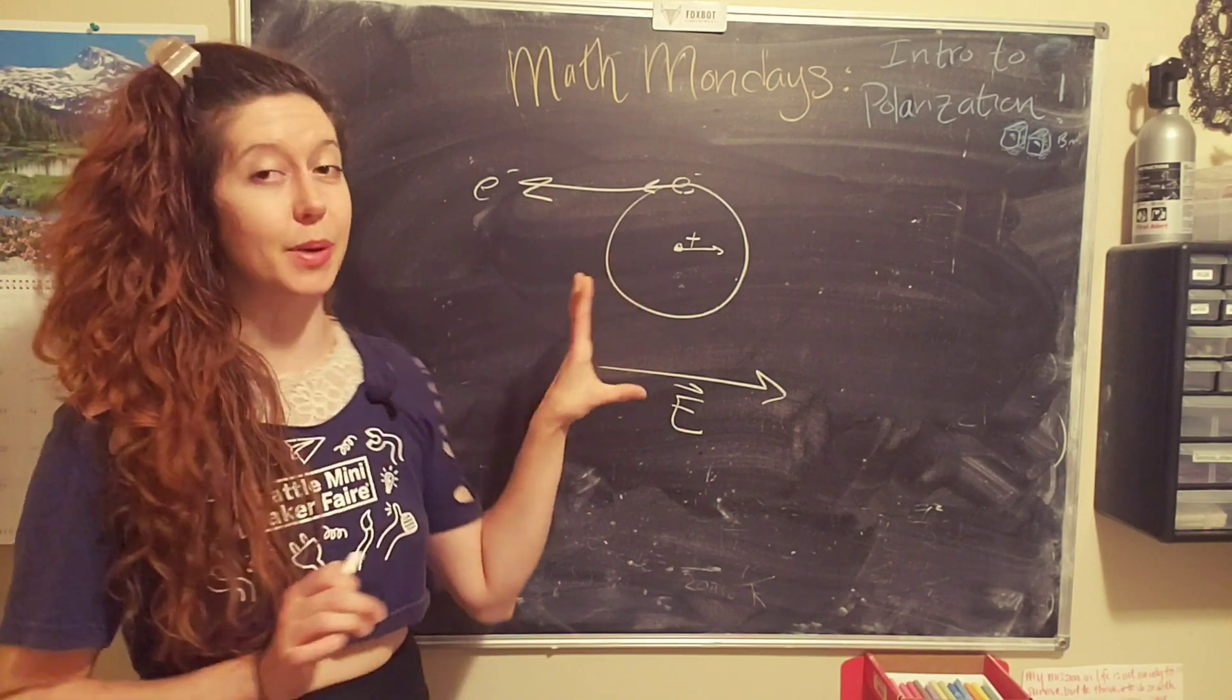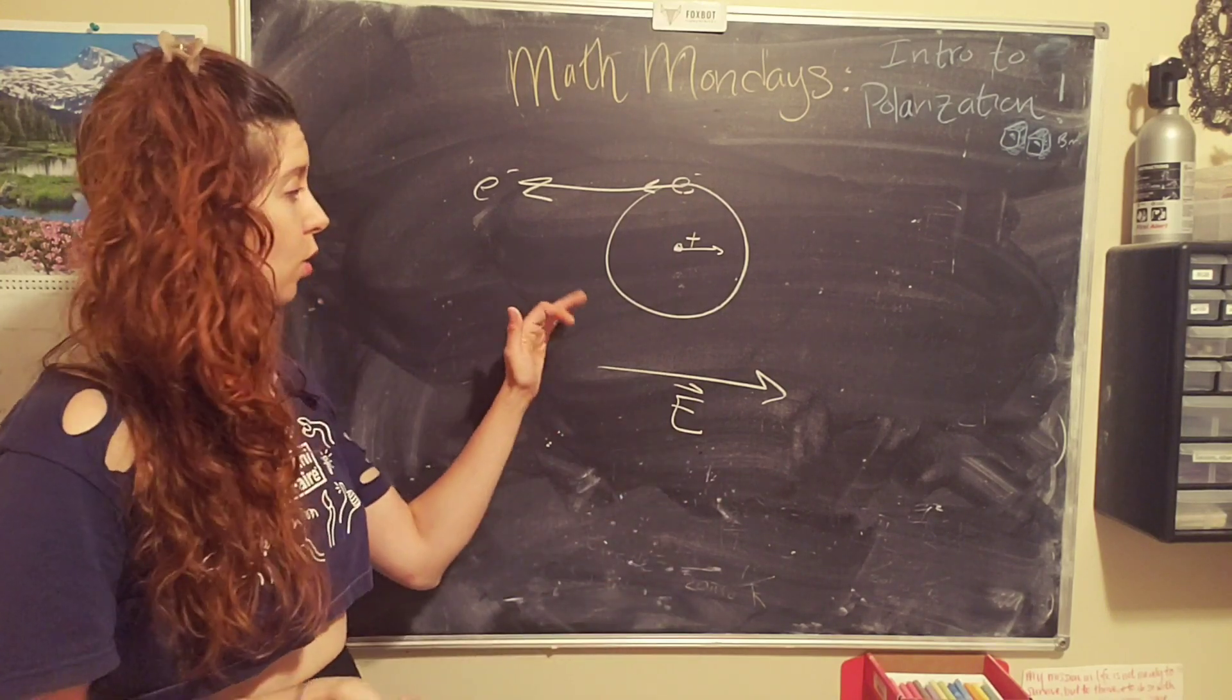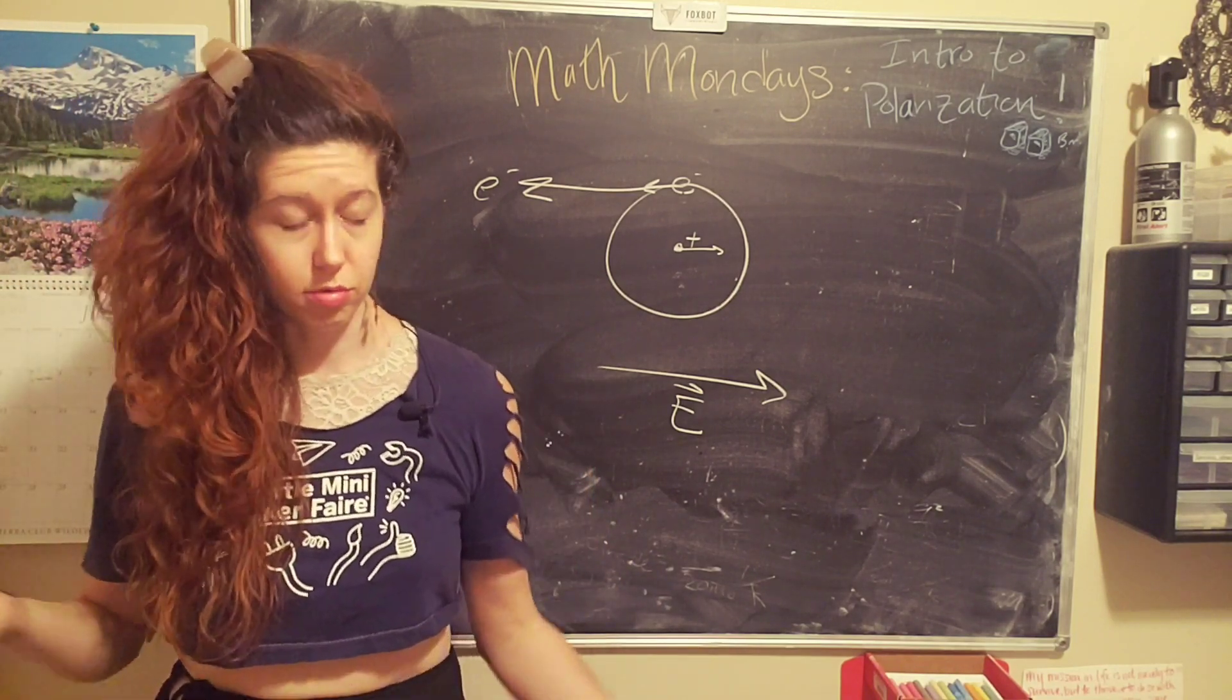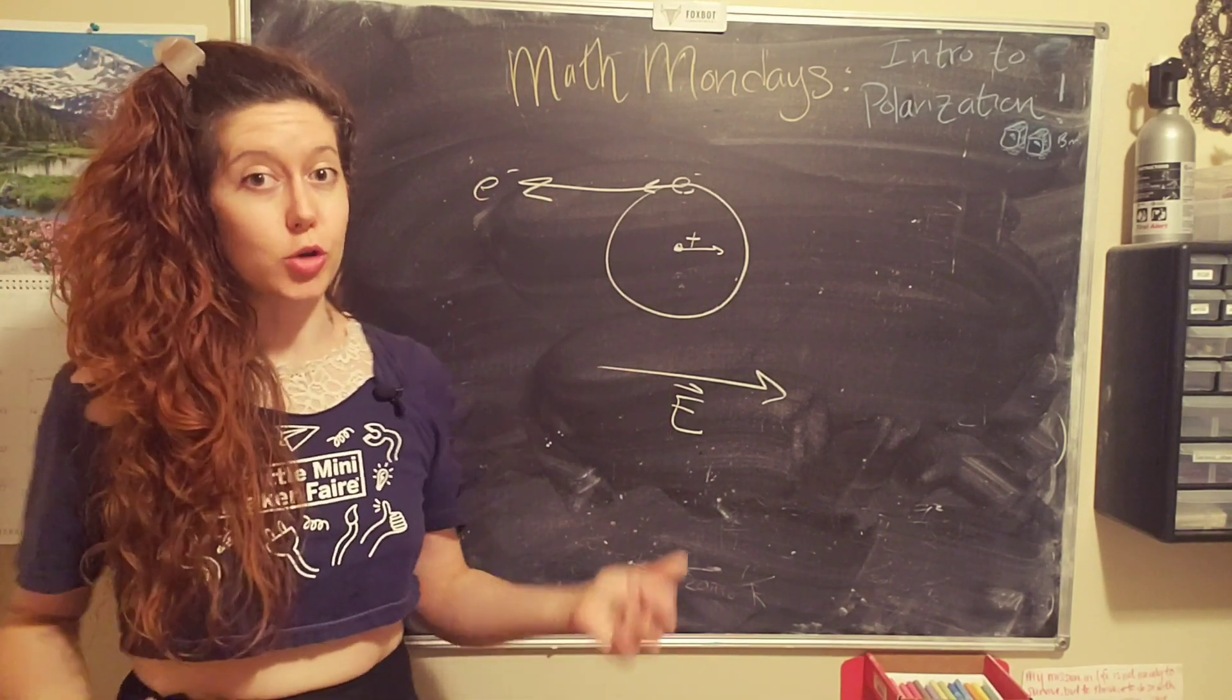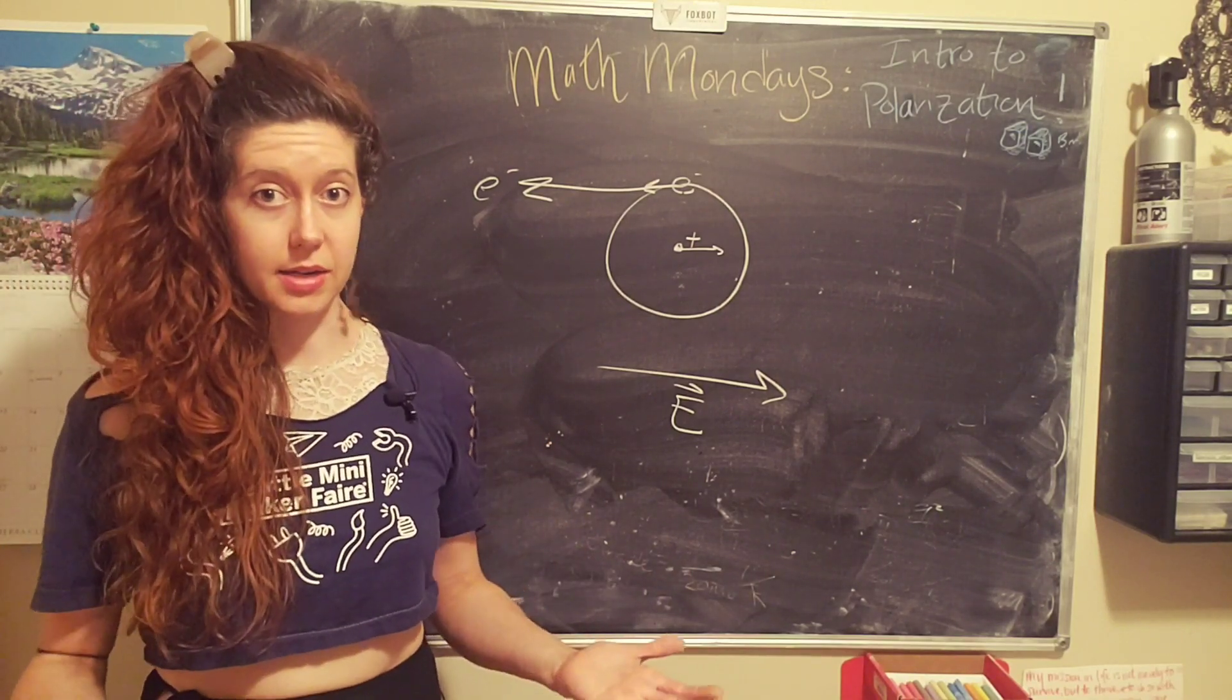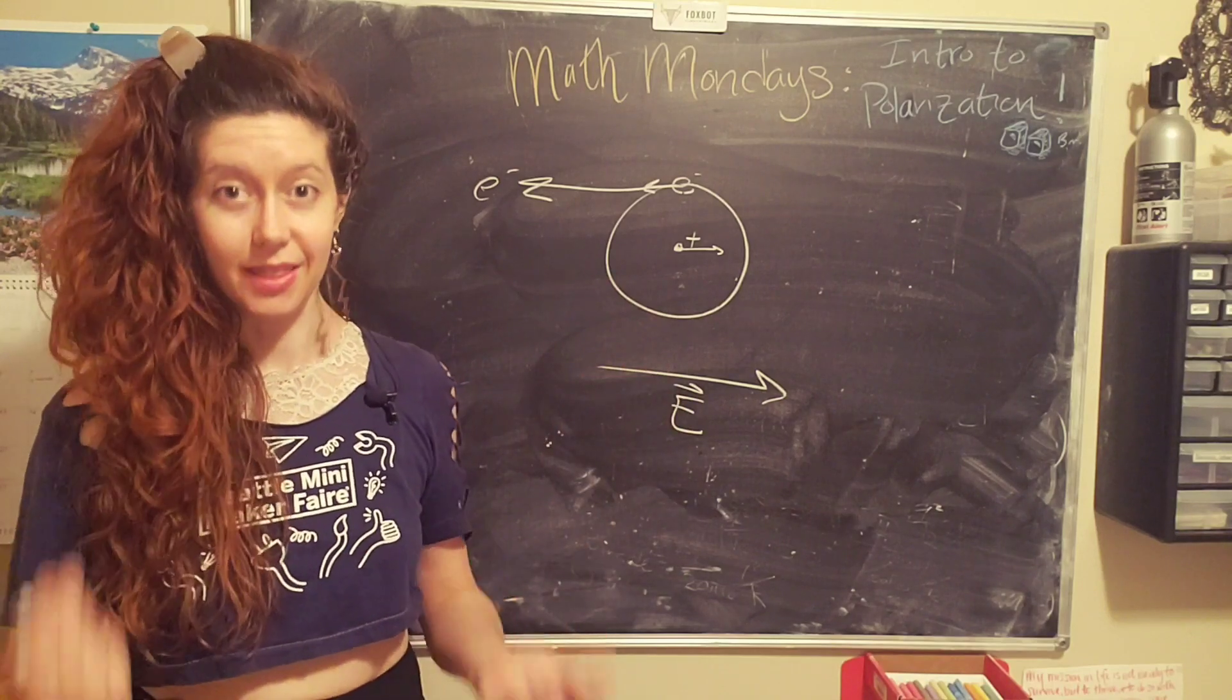So when this happens, this is called ionization. This is really lightning. So lightning happens because there is a very large electric field between earth, the ground, and the sky. And it's so large that it pulls off electrons in the air. And that causes the air to ionize, become a conductor, and then the electrons can flow towards ground, which we see as lightning.